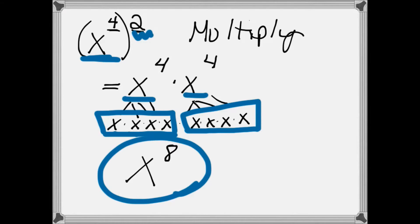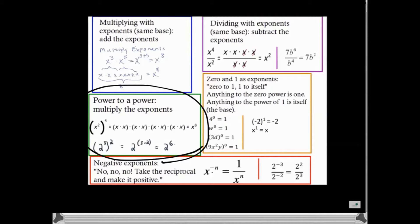Therefore, x to the 4th squared is x to the 8th. When we go back for a power to a power, you multiply the exponents.